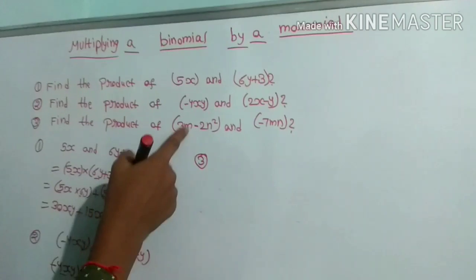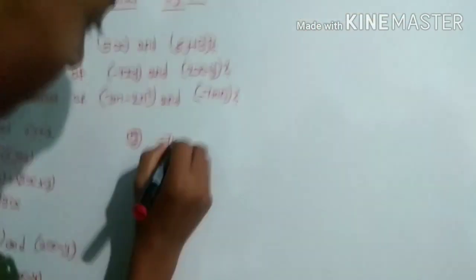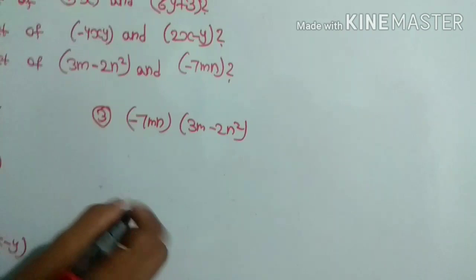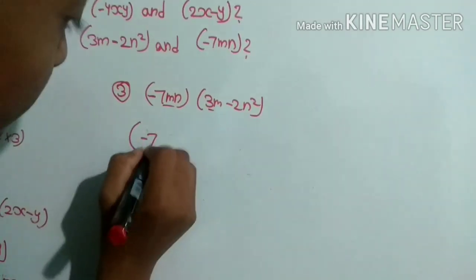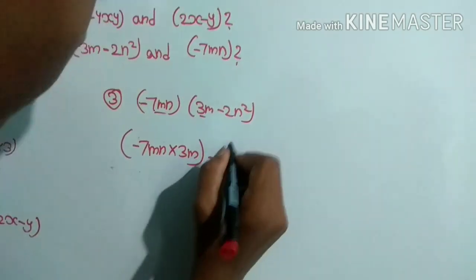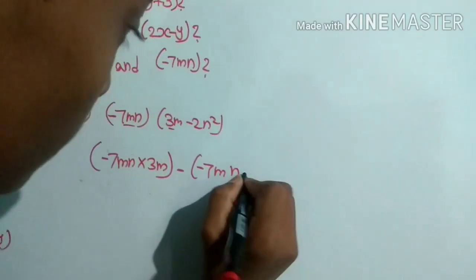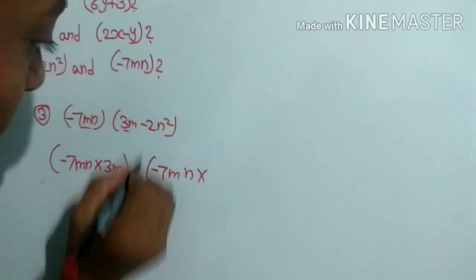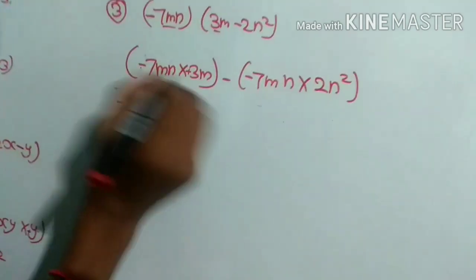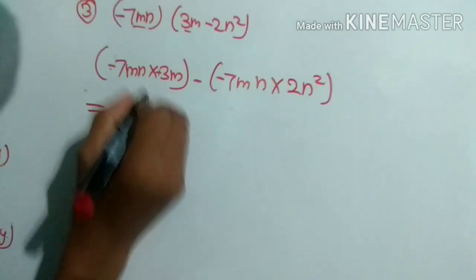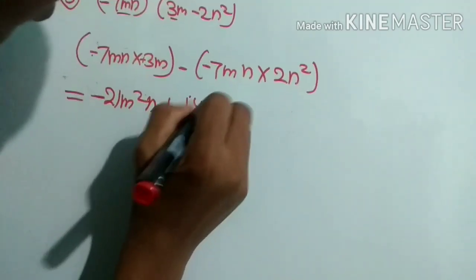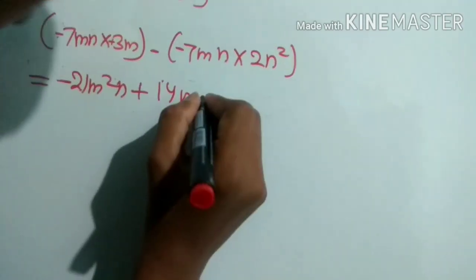Find the product of 3m minus 2n square and minus 7mn. So minus 7mn into 3m minus 2n square. First term: minus 7m into 3m. Plus into minus is minus. Minus 7 times 3 is 21, m times m is m squared. Minus into minus is plus. 7 times 2 is 14, m times n times n squared is n cubed.